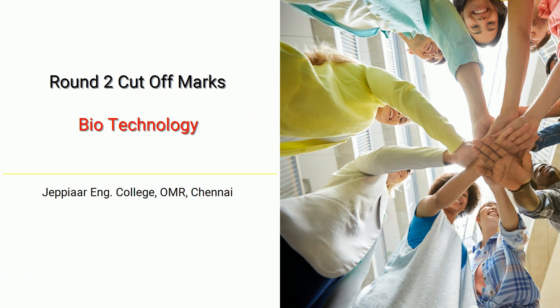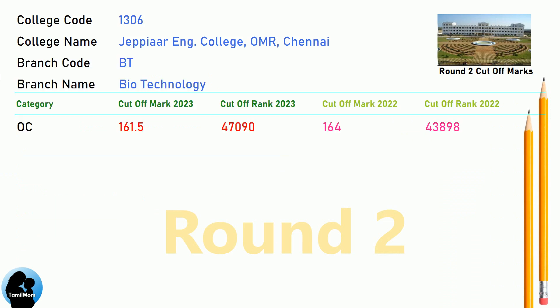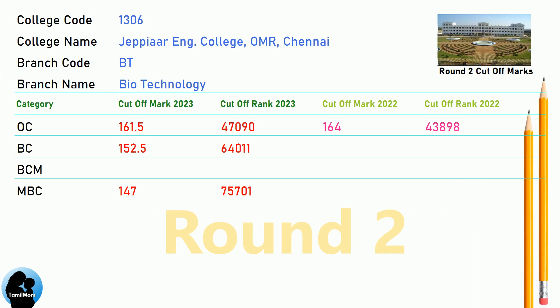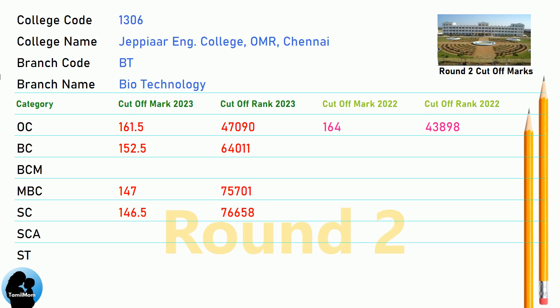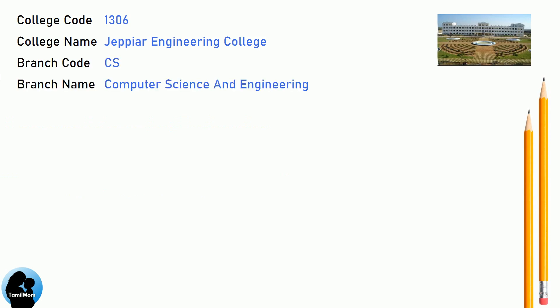DNA Round 2 Cut-off for JPR Engineering College in Biotechnology. DNA Cut-off for JPR Engineering College in Computer Science and Engineering.